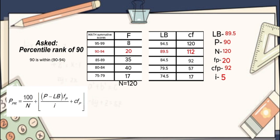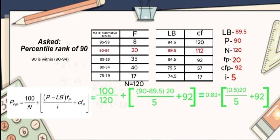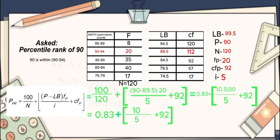There is a formula below on the left side, which will serve as our guide in solving the test. Substitute all the variables in the formula and follow the PEMDAS rule and simplify. 90 minus 89.5 is equal to 0.5. 0.5 times 20 is 10, and 10 divided by 5 is 2. Finally, 0.83 plus 2 plus 92 is 94.83.